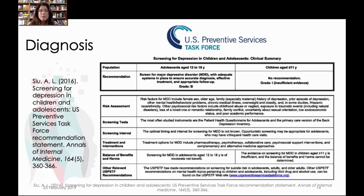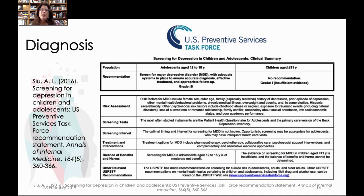Even though this was a 2016 study, more recent 2019 research is showing that the onset of adolescence can be as early as eight years old in females and nine years old in boys. So this earlier recommendation may change, and the range for early diagnosis may drop below 12 years old based on these newer findings.